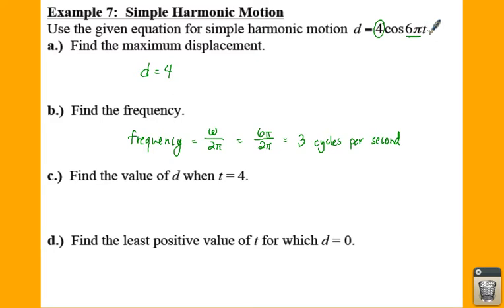Find the value of d when t is equal to 4. So if t is equal to 4, all we have to do is just plug this in and find out what our d is. So we're going to have 4 cosine of 6 pi times 4, which means you're going to have 4 cosine of 24 pi.